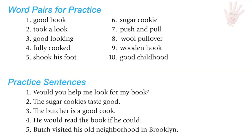Word pairs for U: good book, took a look, good-looking, fully cooked, shook his foot, sugar cookie, push and pull, wool pullover, wooden hook, good childhood.